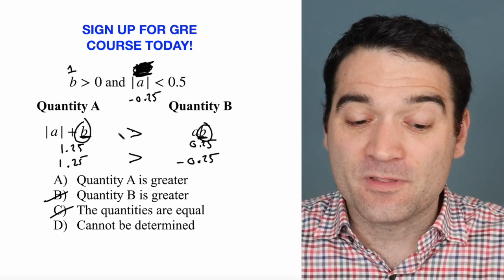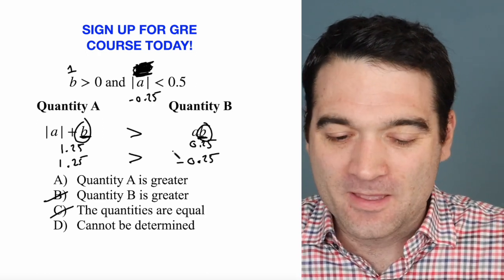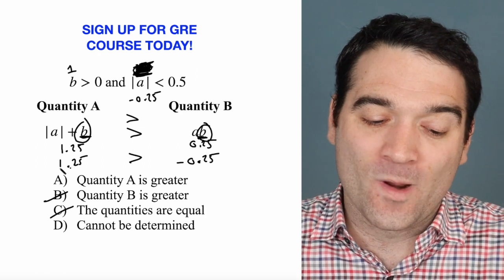So B is common to both of these. But here I'm adding something and here I'm multiplying by a negative, meaning that quantity A always will be greater.